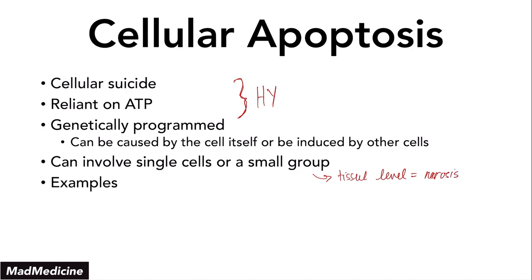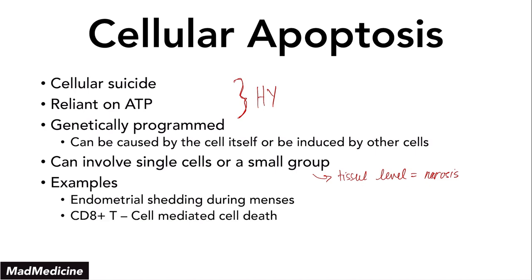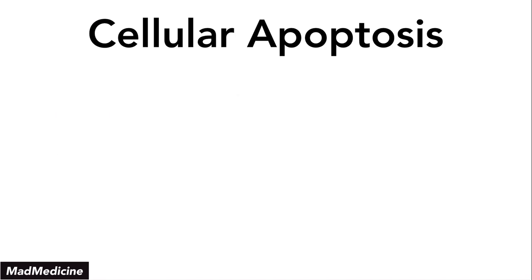An example of apoptosis would be the endometrial lining that sheds during menses. CD8-positive T-cell mediated cell death is essentially a type of extrinsic cellular apoptosis, and embryogenesis is also a type of intrinsic apoptosis, just like the endometrial lining shedding during menses. There are some very high-yield concepts you need to commit to memory as far as apoptosis is concerned.